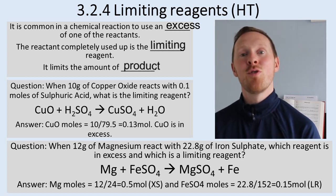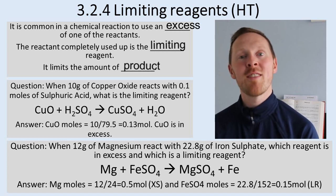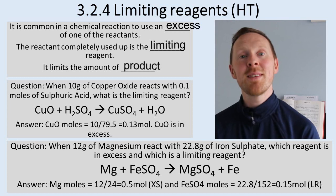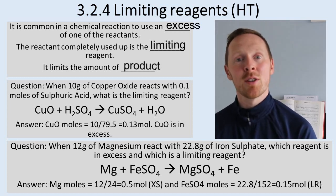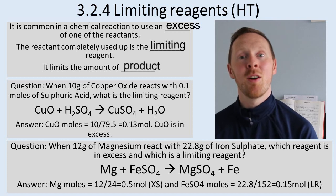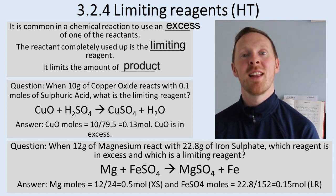So we have 0.5 moles of magnesium reacting with 0.15 moles of iron sulfate. Magnesium is in excess and iron sulfate is the limiting factor. That means the amount of product will be based on the amount of iron sulfate used, because it is the limiting factor.